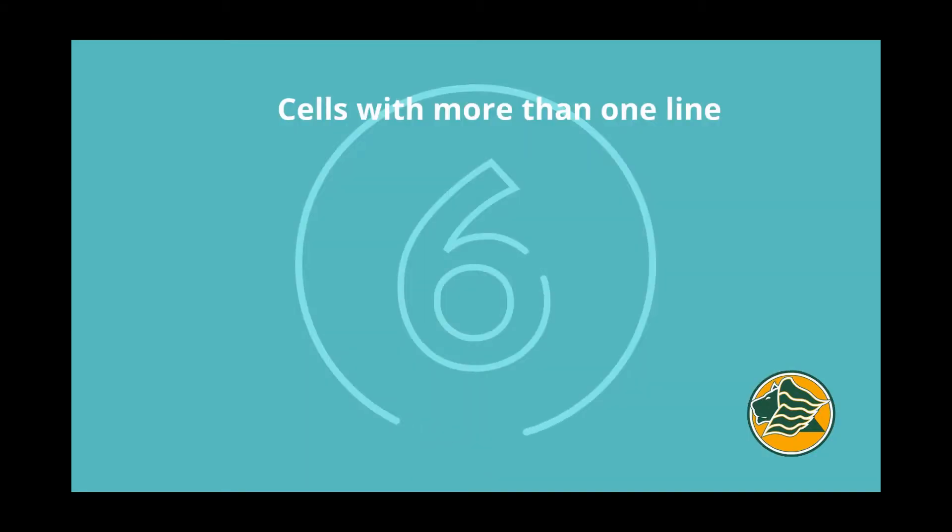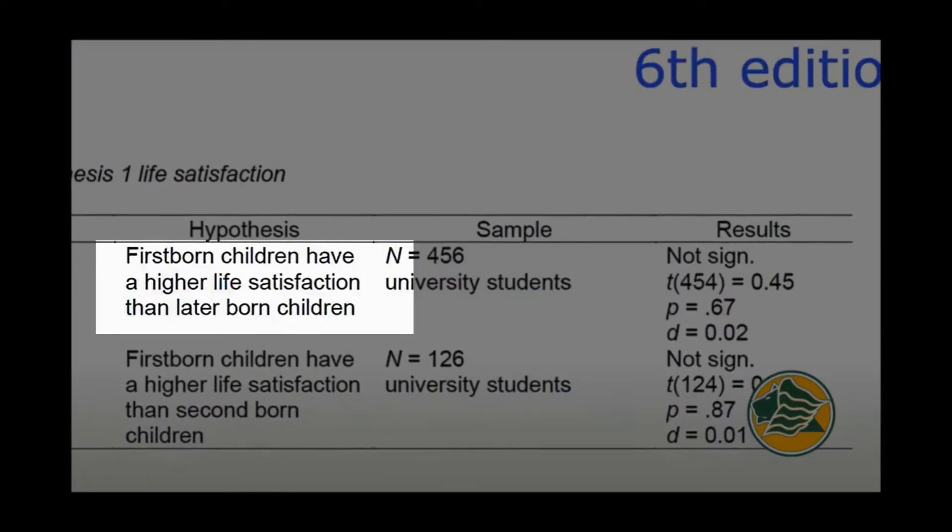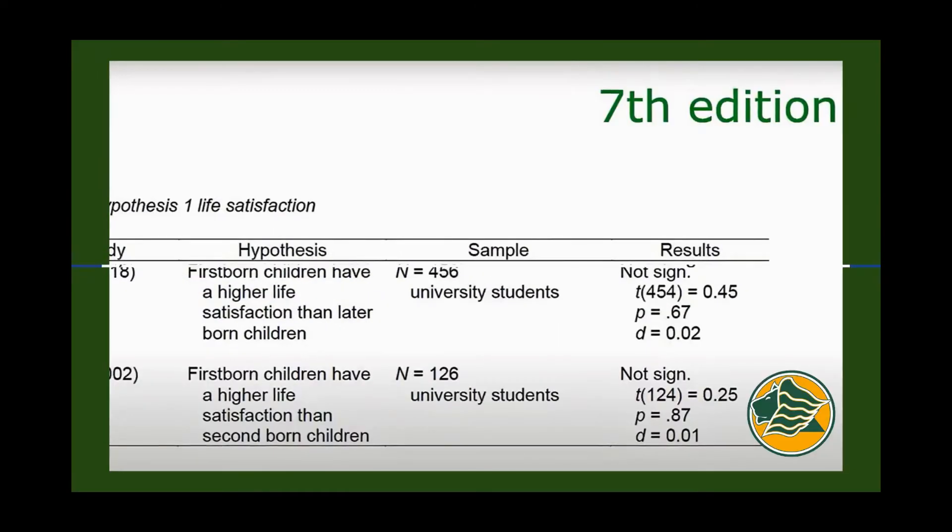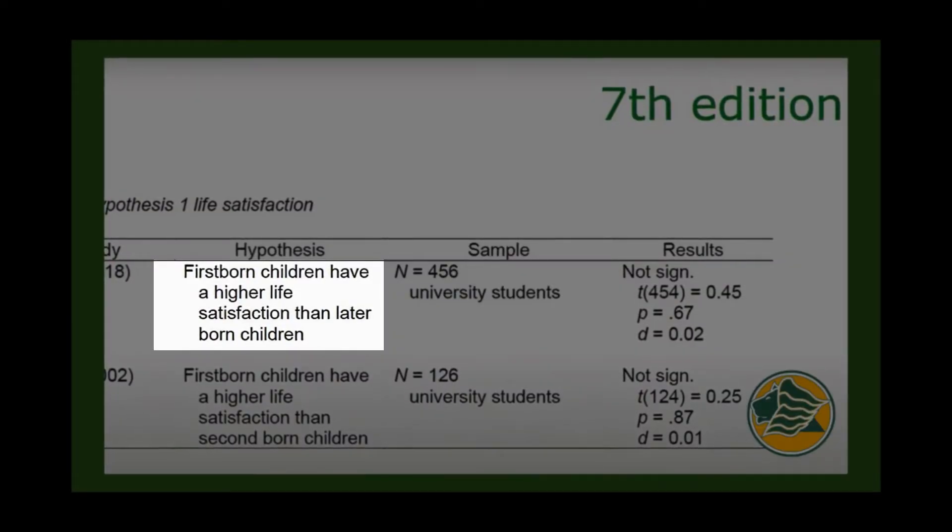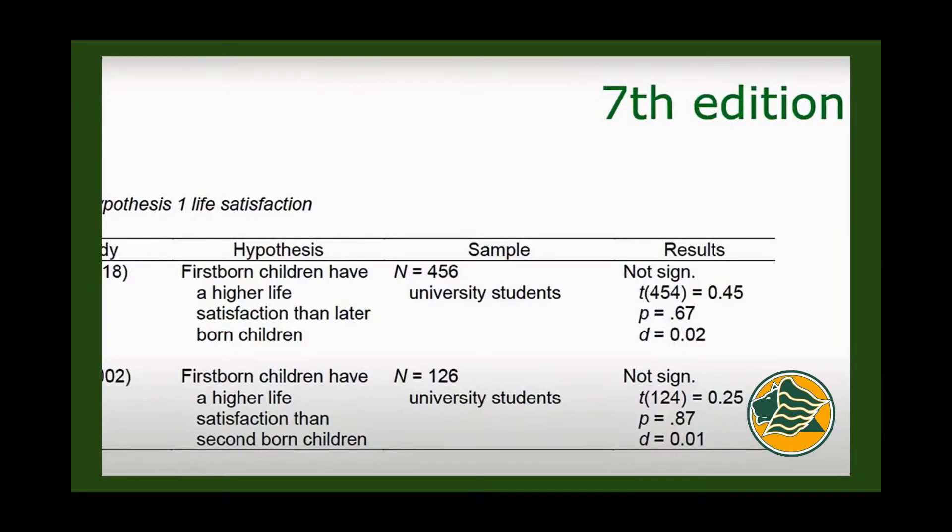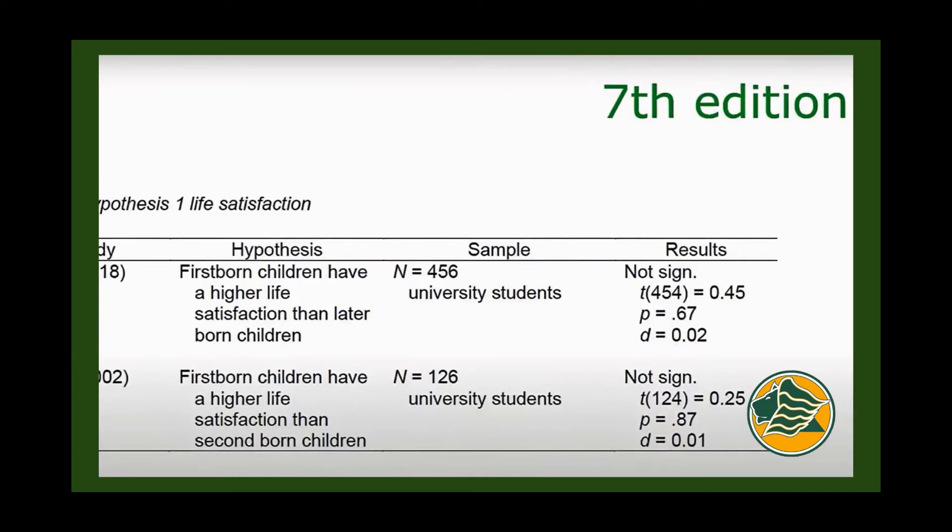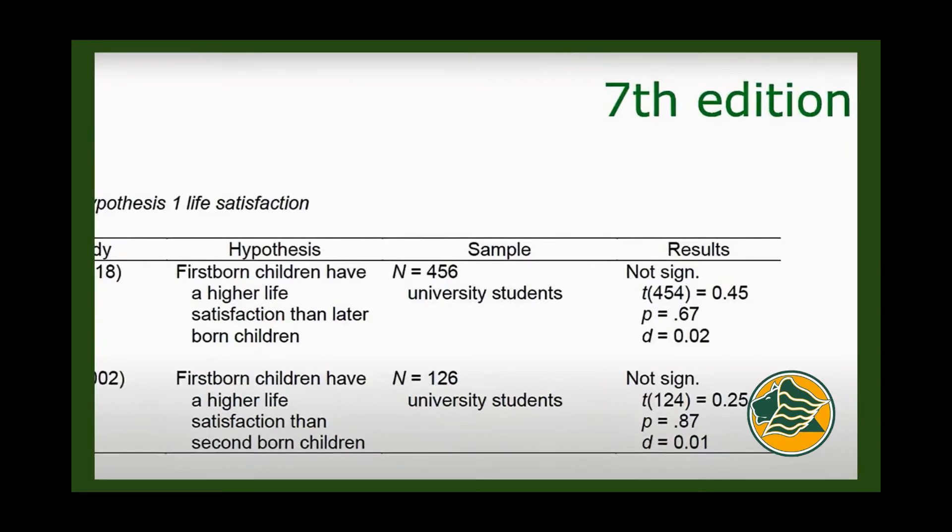The sixth change is cells with more than one line. In APA 6, you would write them with a left orientation. In APA 7, only the first line is all the way to the left. After that, you will indent the following lines. This is much like the hanging indent that we use on the references page for our citations.